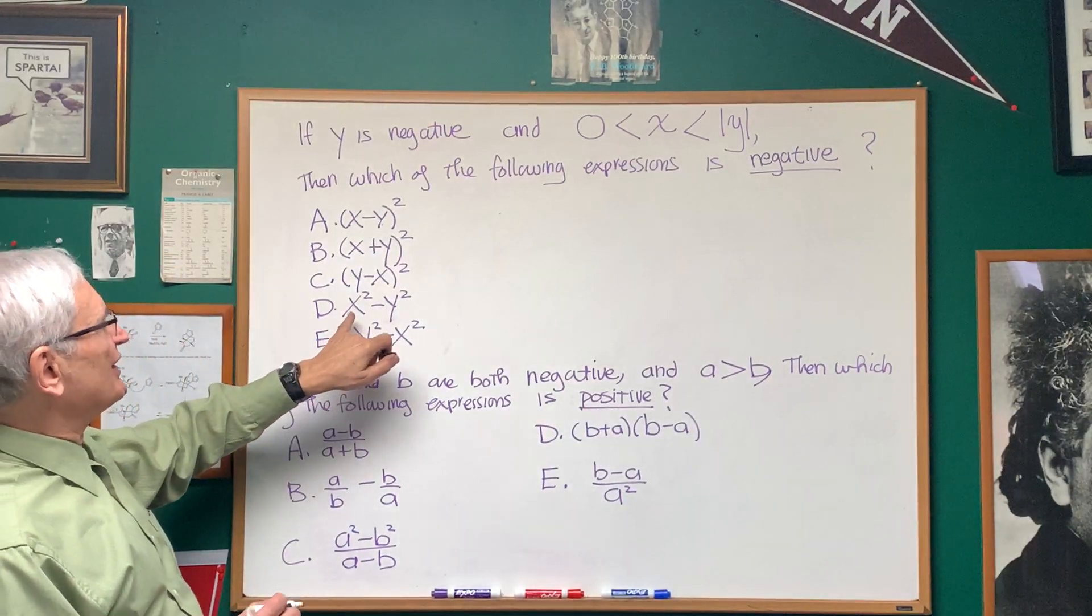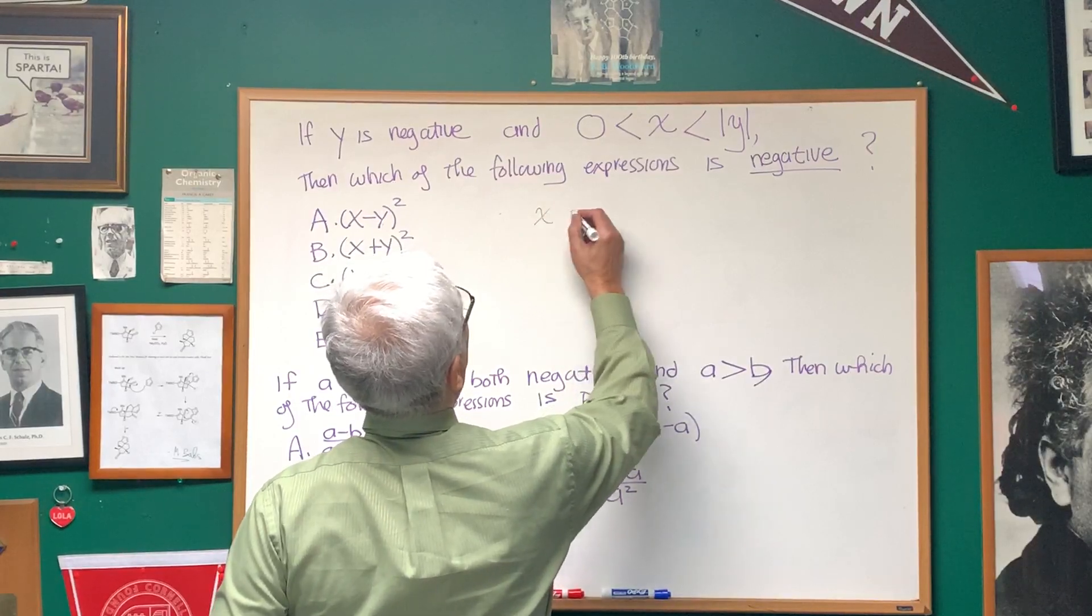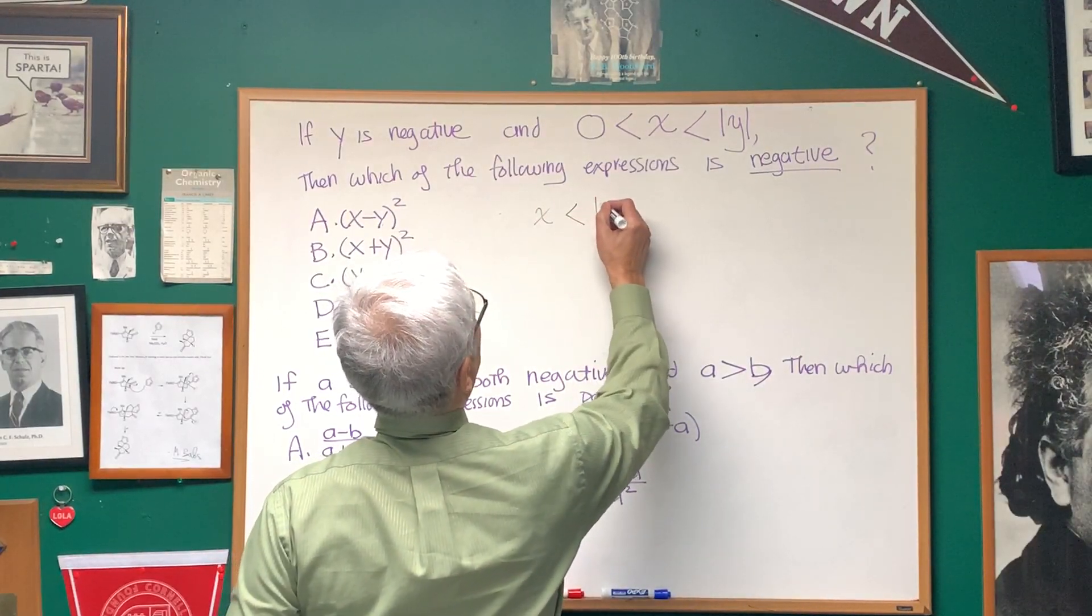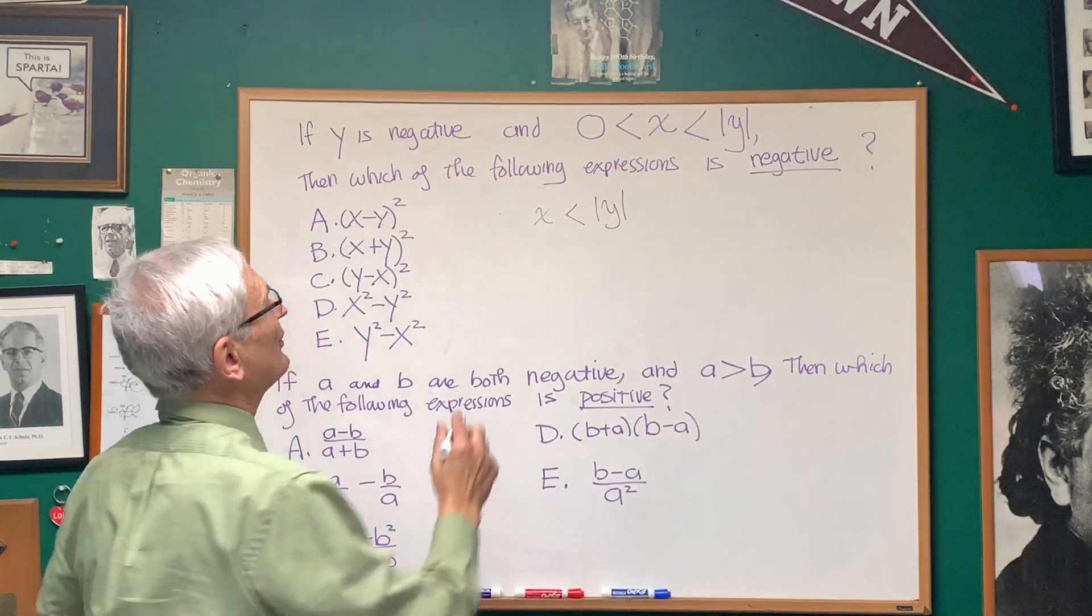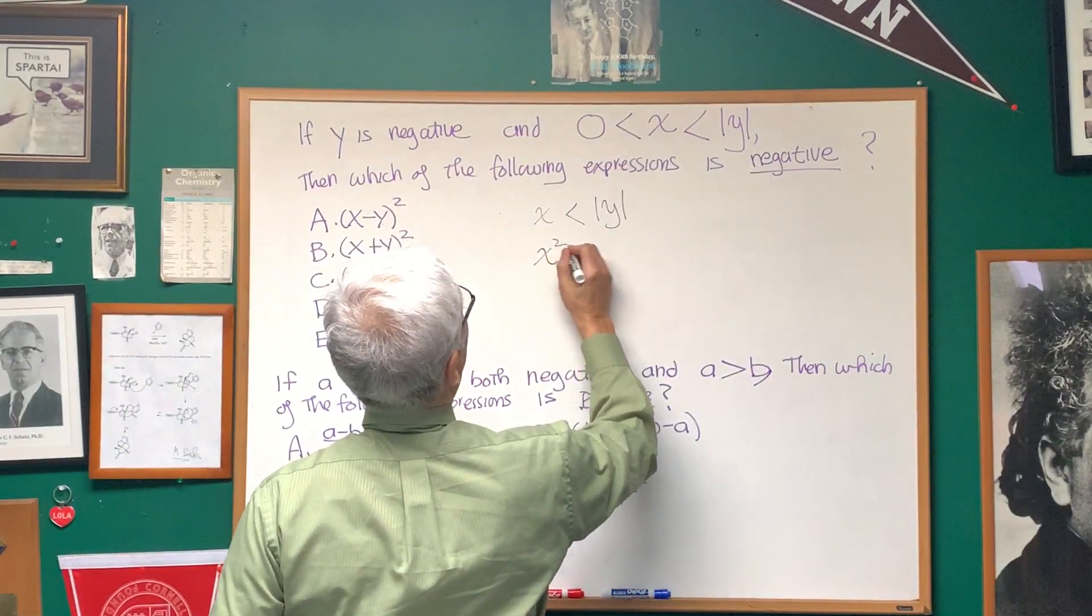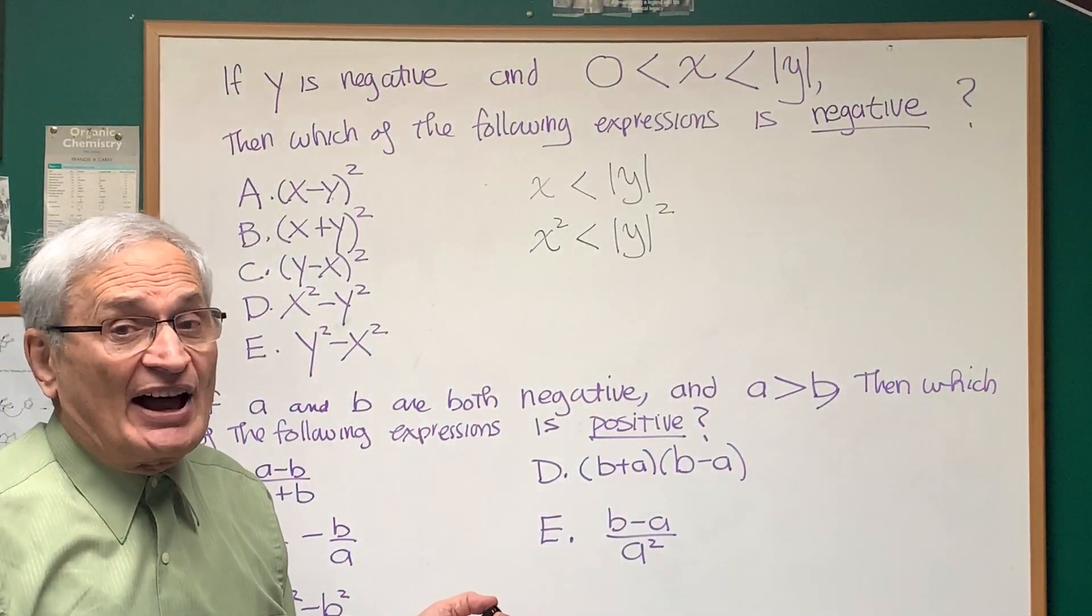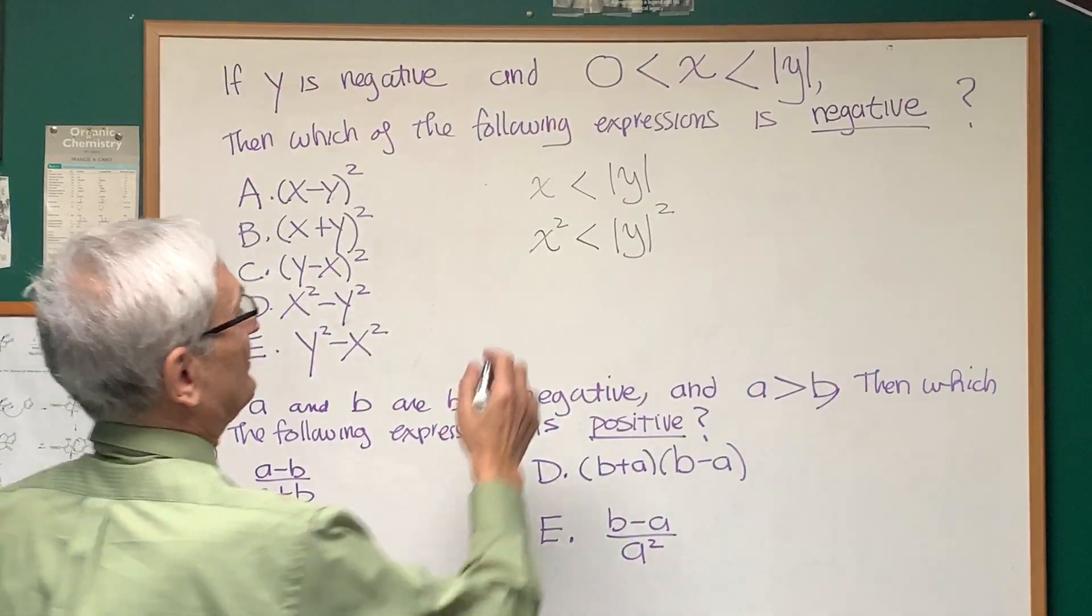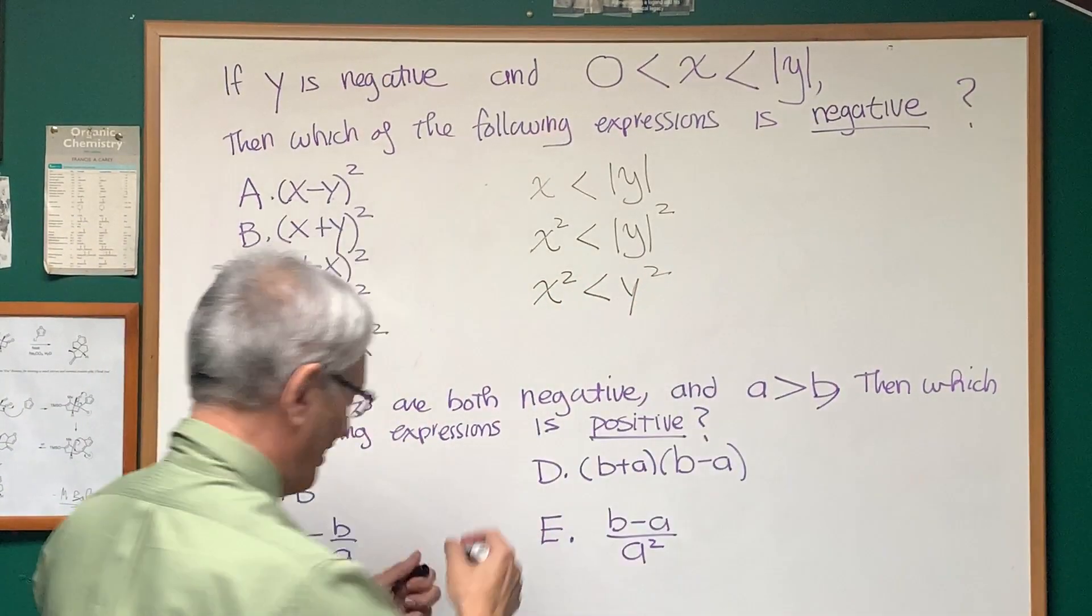So the choice is between D and E. Well we're told that x is less than the absolute value of y. Let's square both sides. We'll still have the same relation. x² is smaller than the absolute value of y². We don't need the absolute value if we're going to square the expression. So x² is less than y².